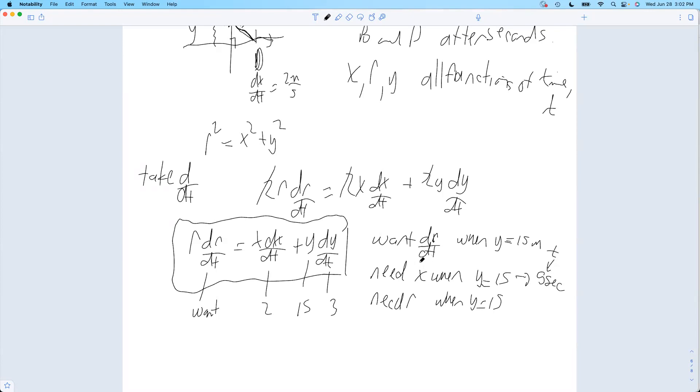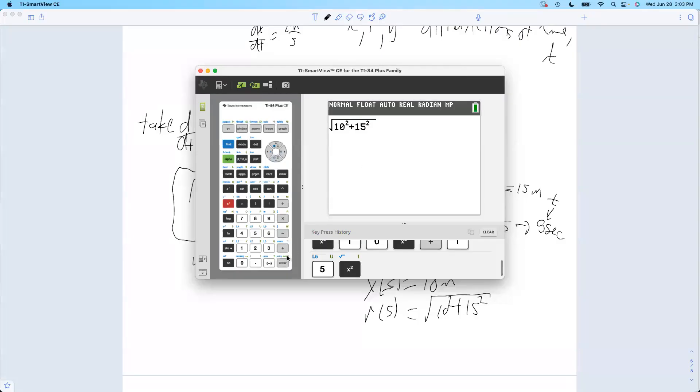So x, Dave down here, he was going two meters per second. x(5) is going to be 10 meters because he's going two meters per second for five seconds. What about r? What's r(5)? Well, I know Pythagorean, that will be square root of 10 squared plus 15 squared. All right, so finding r at that moment, we get 18.03.